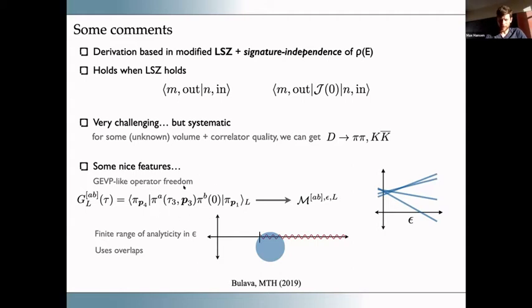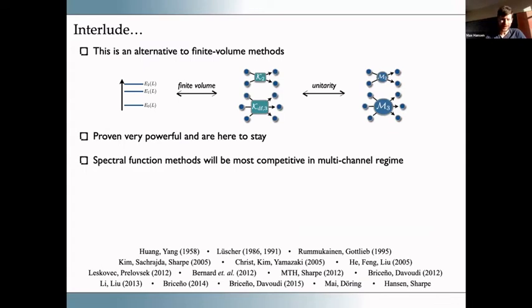Because the operator choice is arbitrary, the estimator at finite smearing epsilon and finite L will differ for different choices, but they must all coincide in the epsilon-to-zero, infinite-L limit. You can imagine performing this extraction with many different choices of pion fields to get better constraints on the amplitude — the intermediate operator dependence that goes away in the end is actually an advantage. I should also note there is a completely different system for getting scattering amplitudes on the lattice using finite volumes as a tool, mapping finite-volume energies to scattering observables.